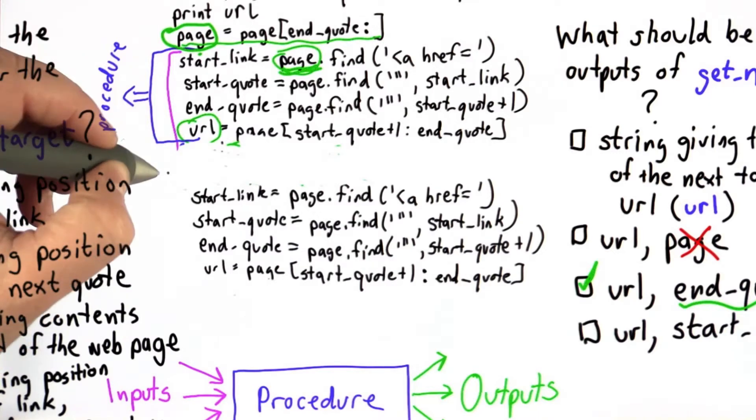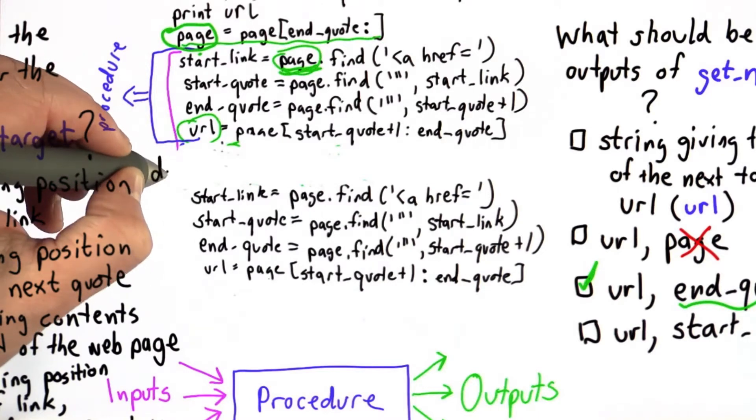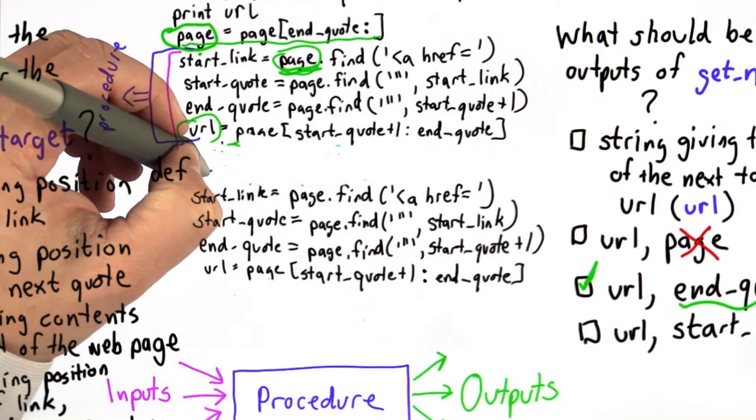So to make it a procedure, we need to use the def name syntax. So we're going to define the procedure, getNextTarget.